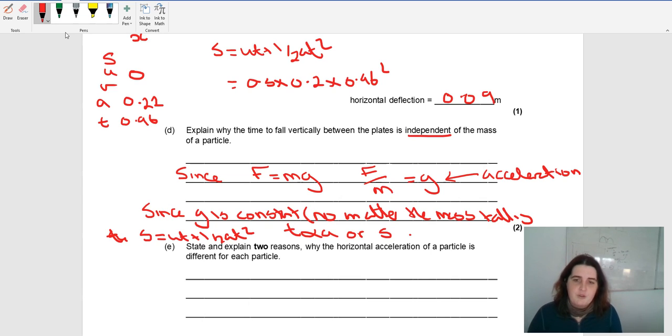I'm saying because the gravitational acceleration, F over M, since G is constant no matter the mass, because the force would change, S equals UT plus a half A T squared. The time to fall is only directly proportional to A, the acceleration which is always constant, and S.